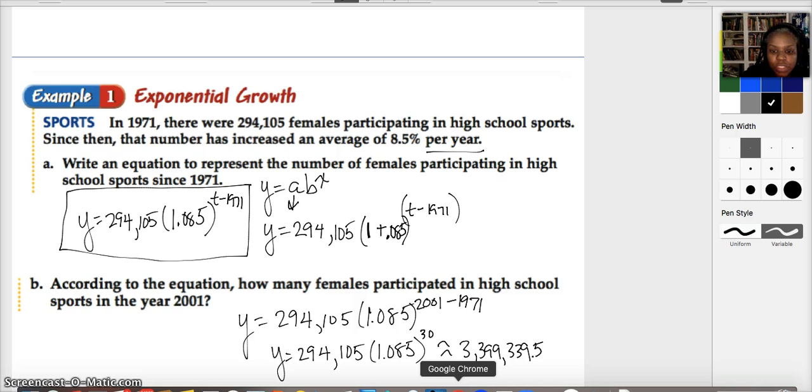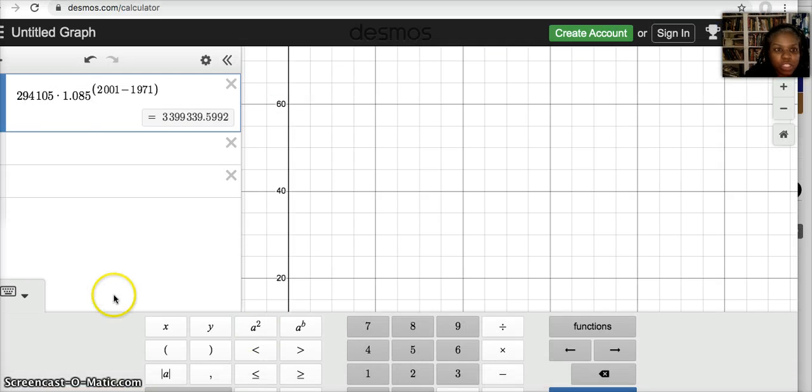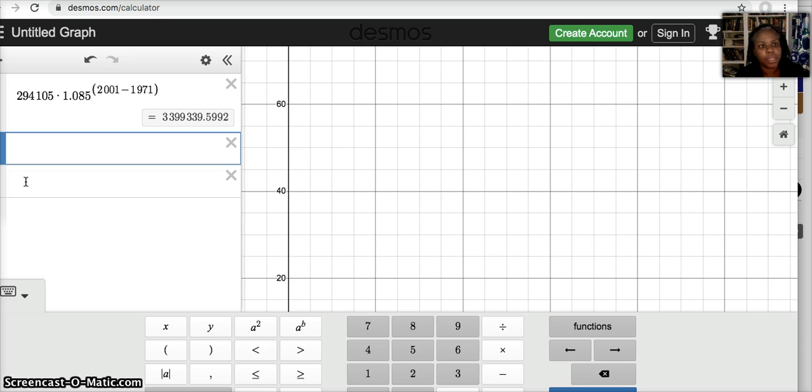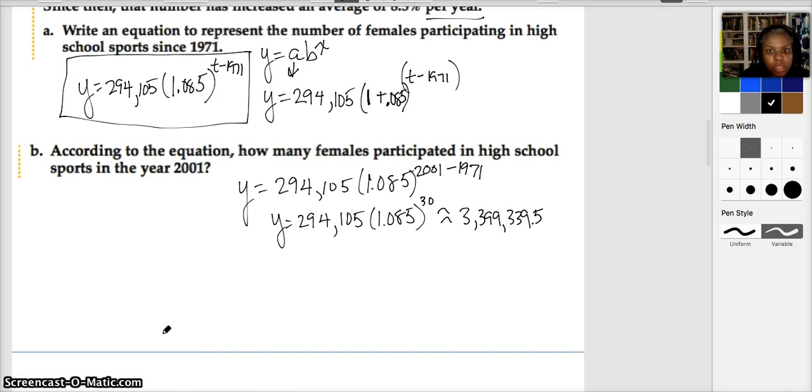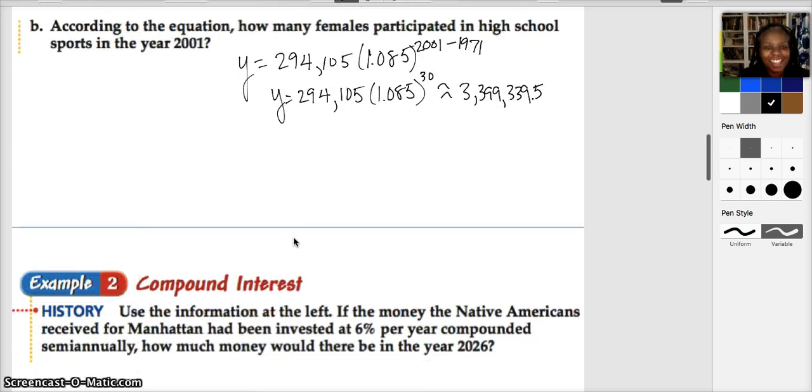So how did I put that information in? When you're using Desmos in a situation like this, you need to know how to access this exponent here. Notice I put in the large number, the 294,000, times 1.085 to the power of, and I have open parentheses here. When you want to get an exponent, let's say I had 2 to the third power, you're going to click on this guy here and it's going to give you access to the exponent. If you need to put an expression up there, you put parentheses and then you can put a whole bunch of stuff. Let's go ahead and look at the next example.